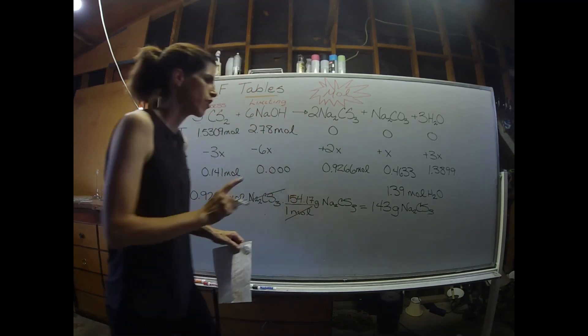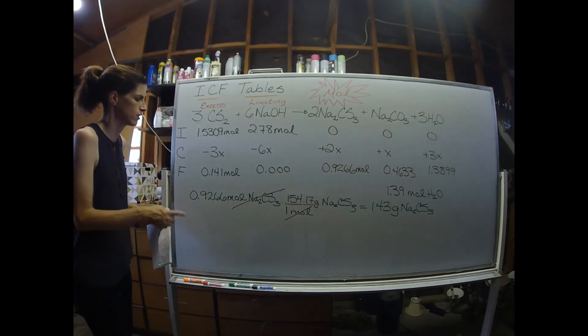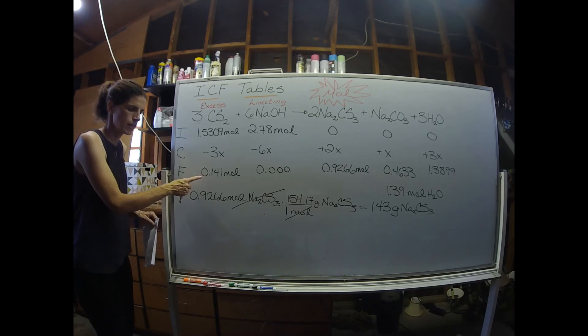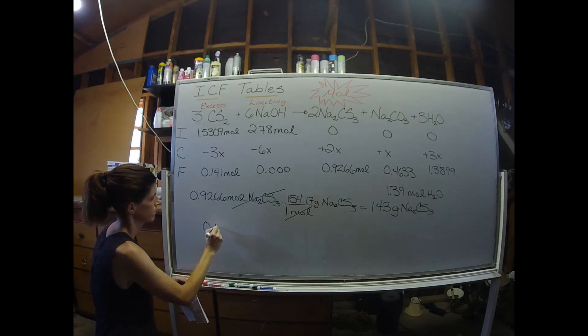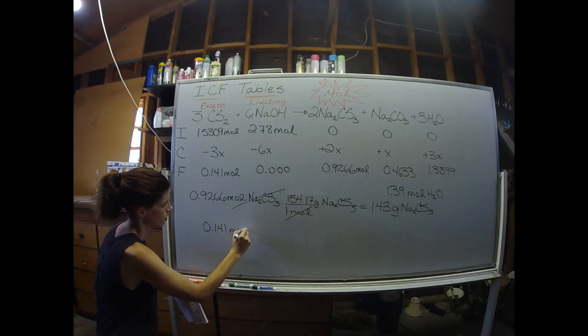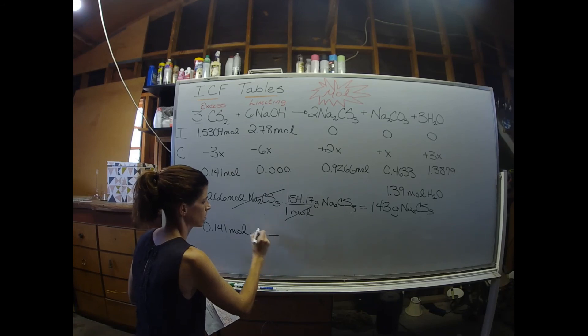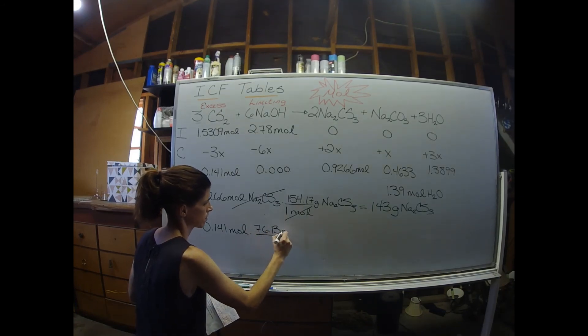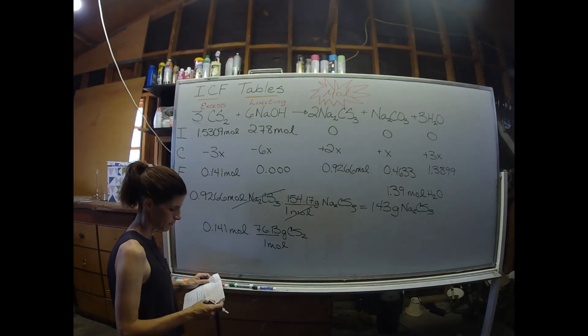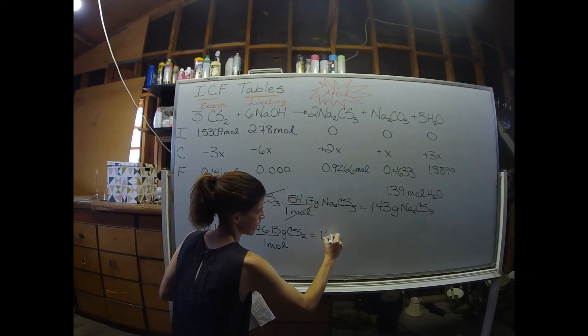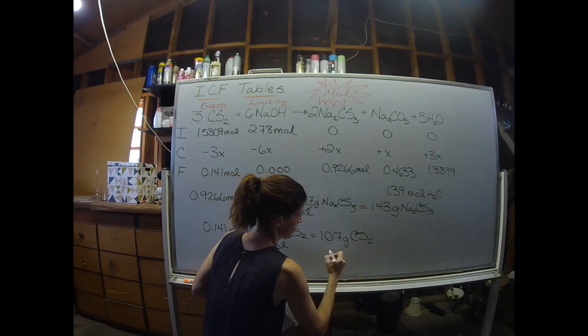And the third question, the perpetual question: how many grams of the excess reactant are left over after the reaction is complete? So we're going to want to grab, again, the mole value in the F line for our excess reactant, and we're going to use the molar mass of the carbon disulfide. And that gives us 10.7 grams of carbon disulfide left over.